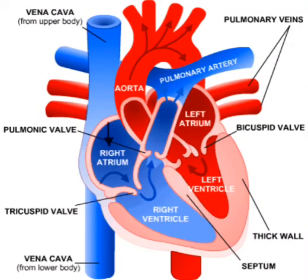Good morning students. Today we will discuss the structure of the human heart. Before knowing how blood circulates or what the mechanism of circulation is in our body, we first need to know about the structure of the heart. The heart is a muscular pumping organ which pumps blood to different parts of our body. It is located in the chest cavity with its tip, the apex, tilted towards the left side.